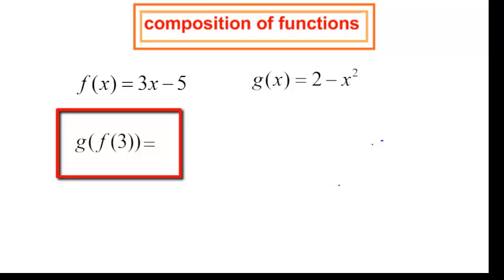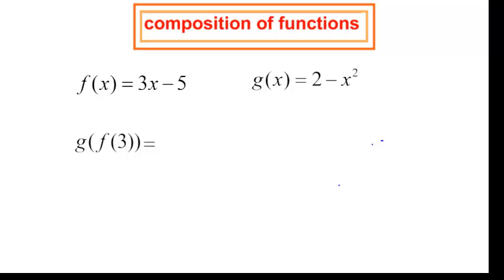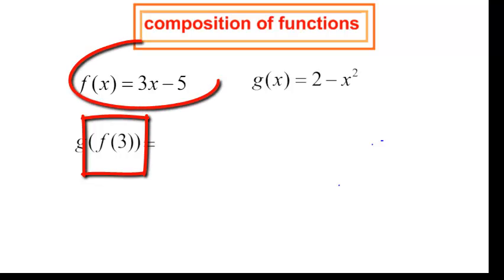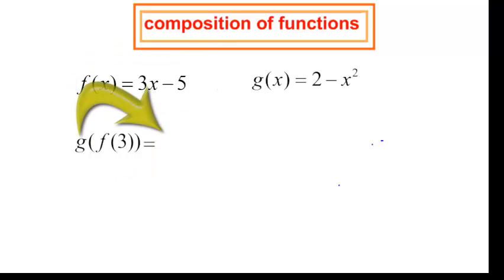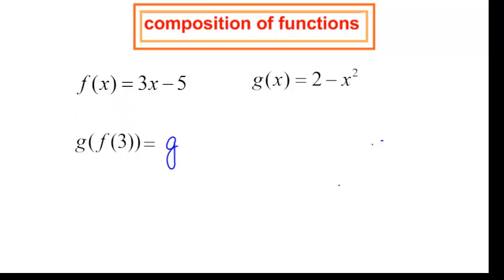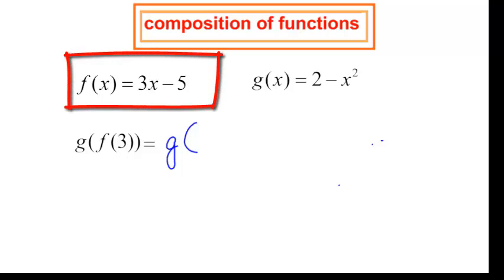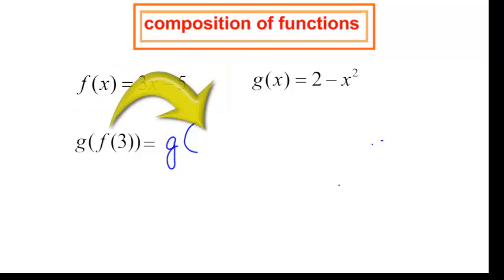This time I want you to find g at f at 3. Remember, just like with parentheses, we work from the innermost out. I am wanting you to find f at 3 first. Wherever you see x in the f function, take x away and plug in 3. f at 3 would be 3 times 3, which is 9, and 9 minus 5 is 4. So f at 3 is 4.